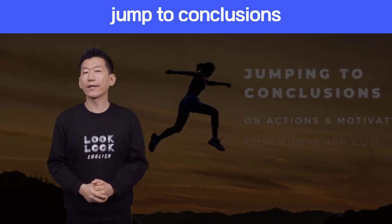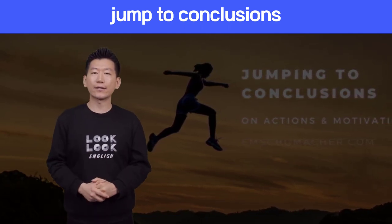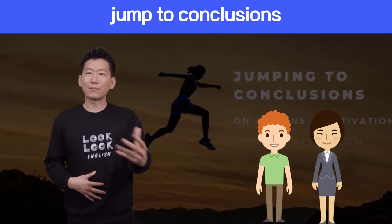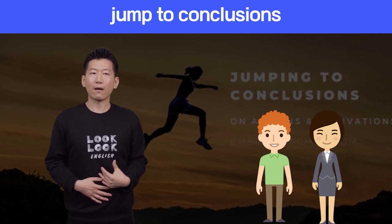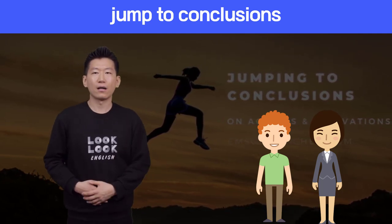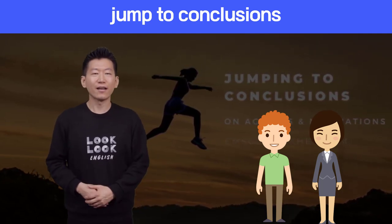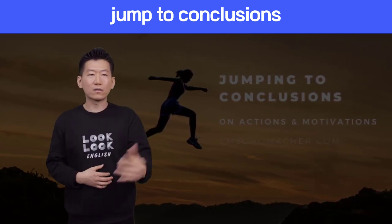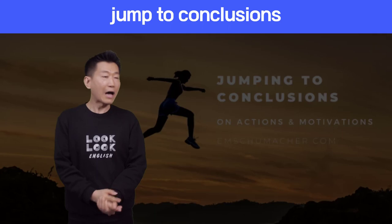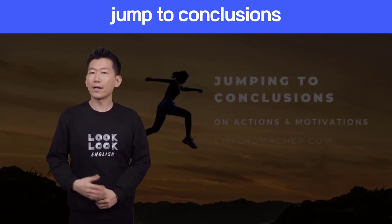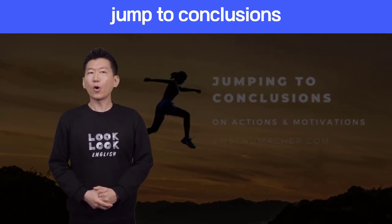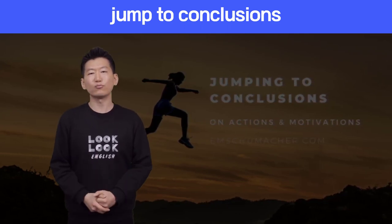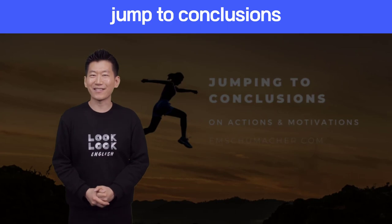가장 대표적인 예는 남녀관계에서 사용할 수 있는데요. 예를 들어 제가 여자친구가 있다고 생각해볼게요. 여자친구가 다른 남자하고 같이 있는 걸 봤을 때, '너 걔 누구야? 너 걔 사귀는 사람이지?' 이렇게 하는 것은 그냥 하나 보고 결론을 내리는 거잖아요. 아닐 경우도 있잖아요. 그래서 항상 생각 없이 jump to conclusions 하면 오히려 더 큰 문제가 생길 수 있다는 거 꼭 기억하시기 바랍니다.